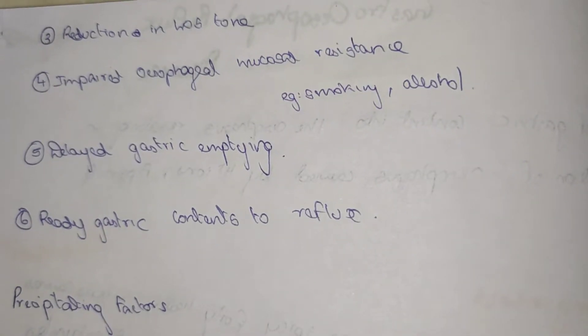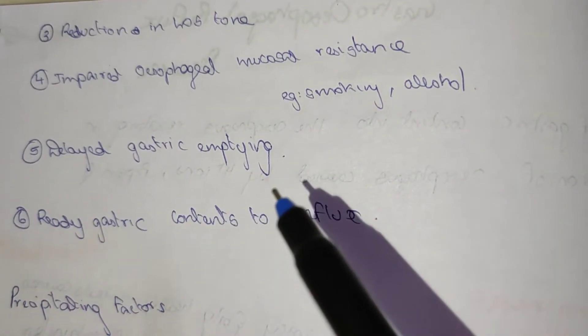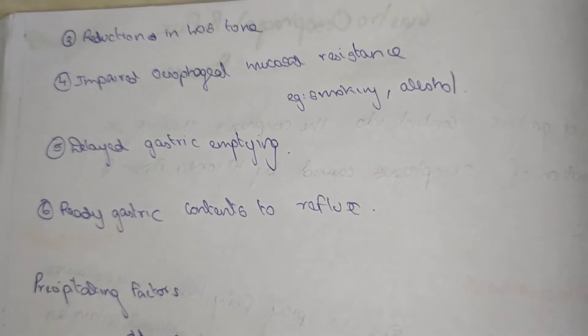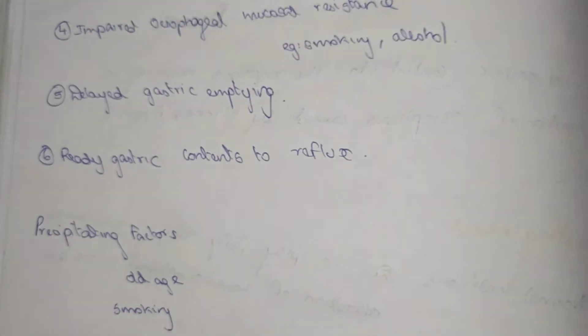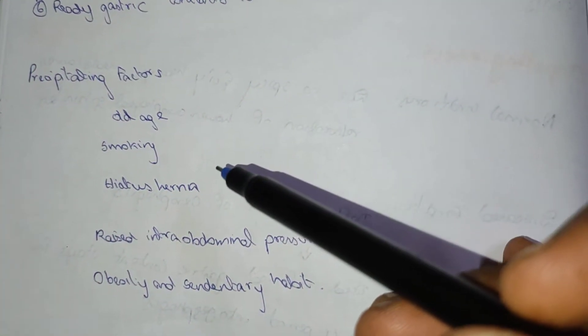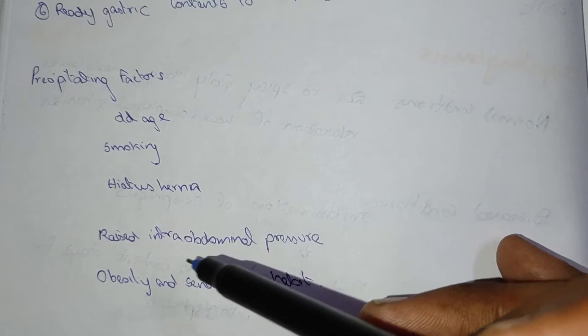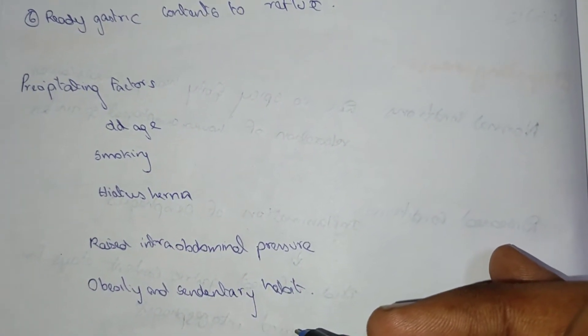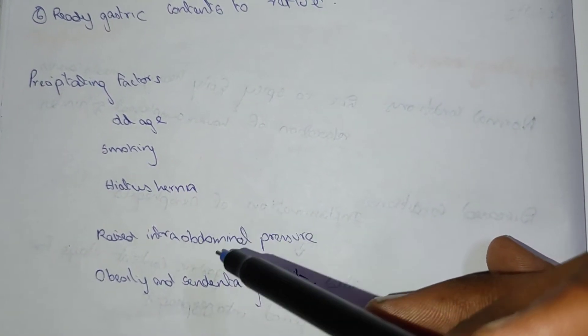Now we will see the precipitating factors of this GERD: old age, smoking, hiatus hernia, raised intra-abdominal pressure, obesity, and sedentary habit. These are the precipitating factors of GERD.